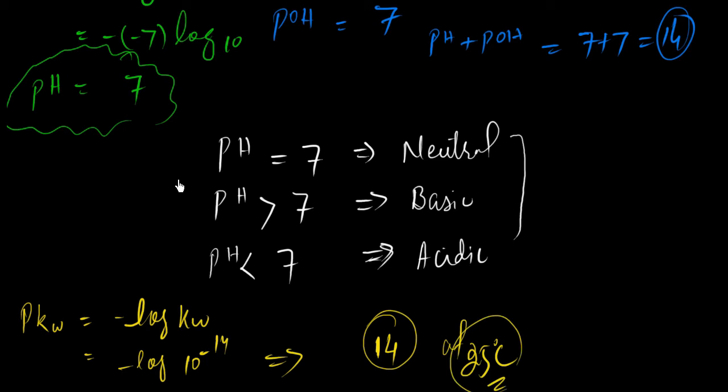According to the Sorensen scale, the pH normally varies between 0 to 14. It means that each and every solution which have hydrogen ion and OH ion concentration in them ranges from 0 to 14.